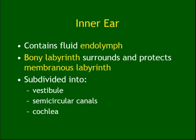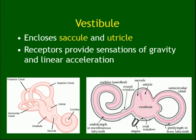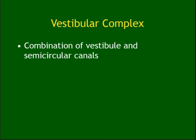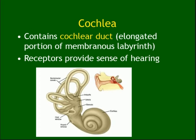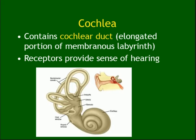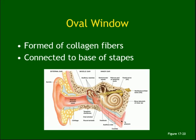The inner ear has a bony outer part and a membranous inner part. The three parts and their functions: the vestibule contains saccule and utricle — function is gravity and linear acceleration. The semicircular canals — they look like circles, so their function is detecting rotation. The cochlea — its function is hearing.